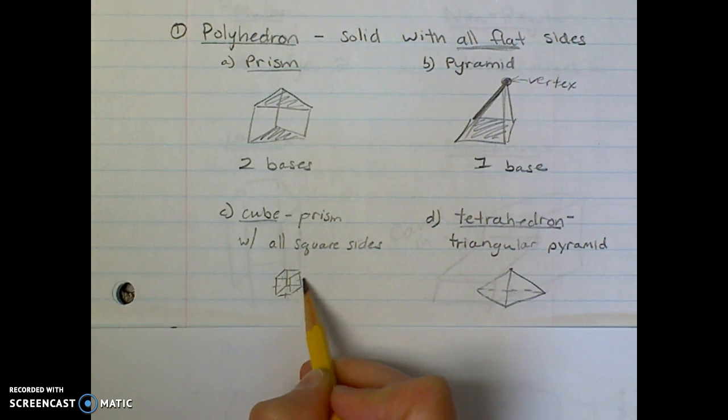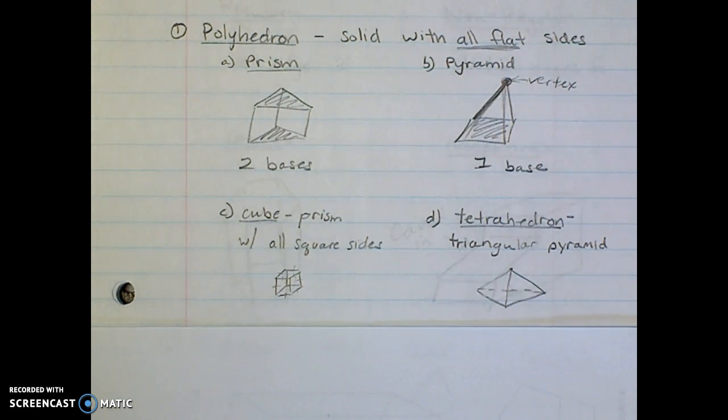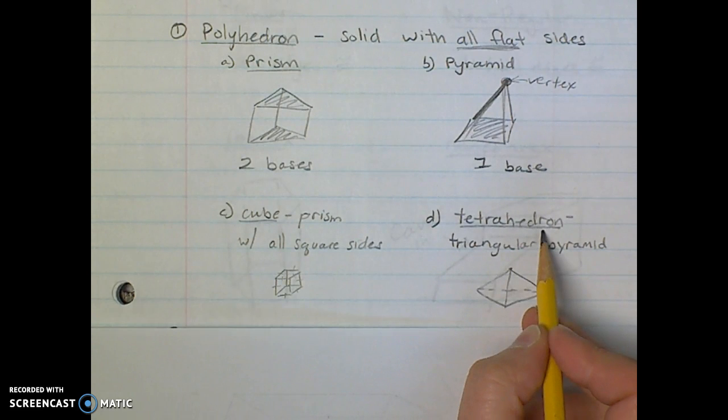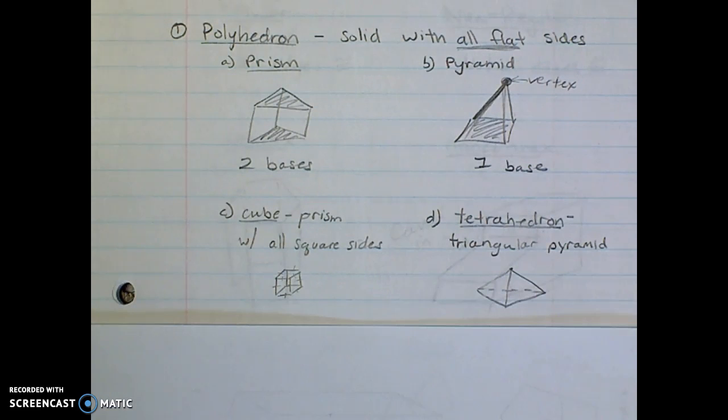And then a triangular pyramid, which is a three-dimensional shape made of all triangles, is also called a tetrahedron. So this is a vocab word you just want to familiarize yourself with and be aware it's really just the same thing as a triangular pyramid.